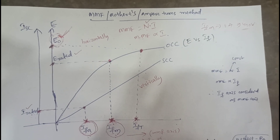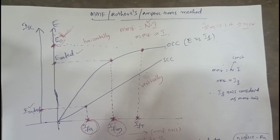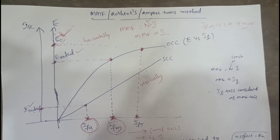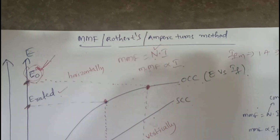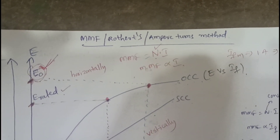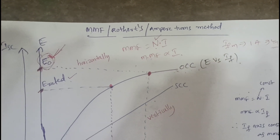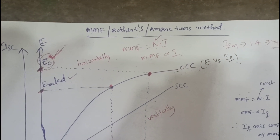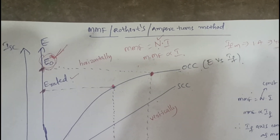Good morning to all. Today we are going to discuss finding the voltage regulation by using the MMF method, which is also called Rothert's or Ampere Turns method.